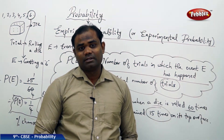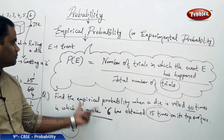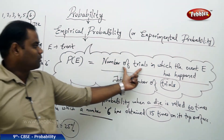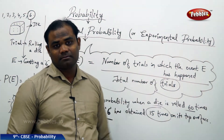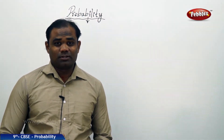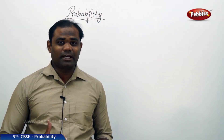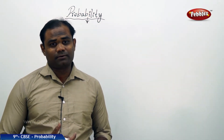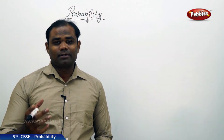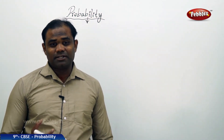Empirical probability connected with rolling a die. Formula: number of trials in which event E has happened divided by total number of trials. Now that we have discussed probability as a chance of happening and not happening with various examples and its experimental approach, let's try to see some of the properties involved with probability. In the previous example, for a die rolled, getting a 6 on the top surface, I got my probability value as 1 by 4, that is 25% chances.